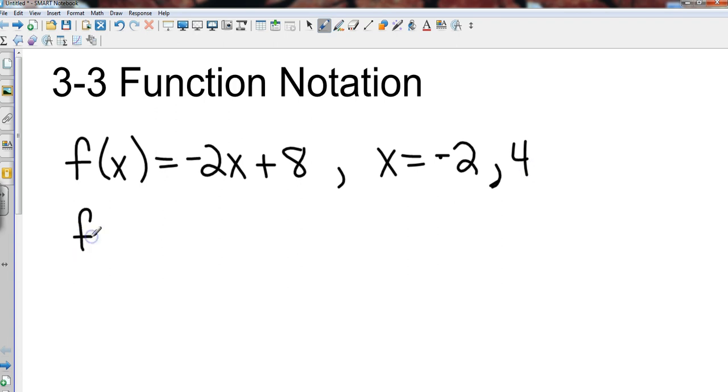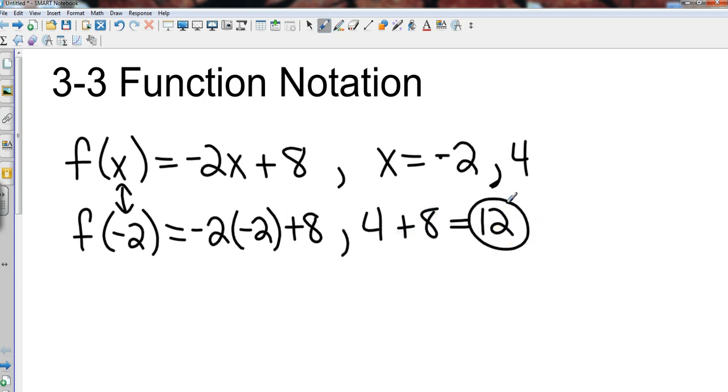And so everywhere I see an x, I replace it with negative 2. So that's going to be negative 2 times negative 2 plus 8. Negative 2 times negative 2 gives me positive 4, and positive 4 plus 8 gives me a value of 12.